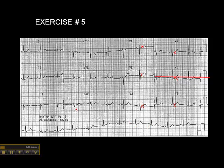Looking at the rest of this ECG, we have a P wave, a narrow QRS, and a heart rate within normal range. Looking at the rhythm strip at the bottom, a QRS falls on a dark line, giving us 300, 150, 175 — roughly 73 beats per minute.